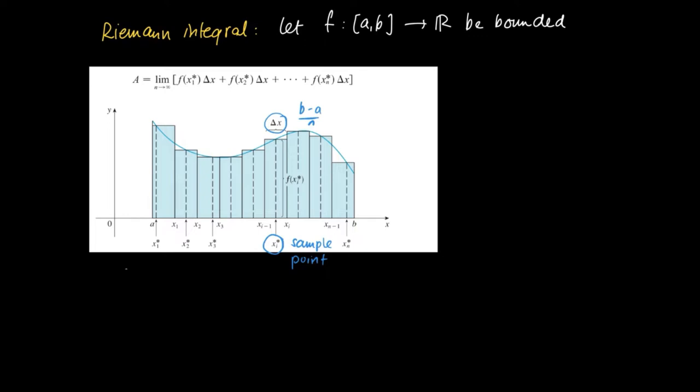We are subdividing the interval [a, b] into n equal pieces. So we have a width of an interval, Δx = (b - a)/n.